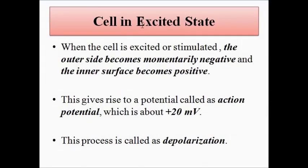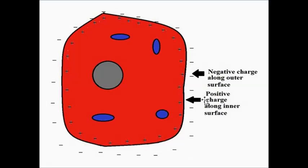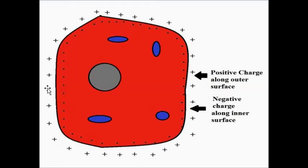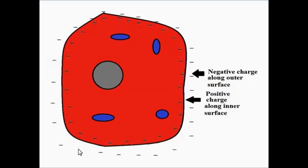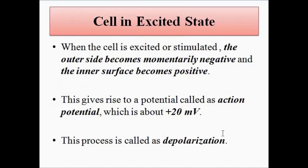When the cell is excited — that is, the cardiac cell is excited by the sinoatrial node because of the heartbeat at 72 beats per minute — the outer side becomes momentarily negative and the inner side becomes positive. That is, there is a migration of ions, a migration of charge. In its resting state there was positive charge along the outer side and negative on the inner side, but in the excited state there is negative on the outer side and positive on the inner side of the cell.